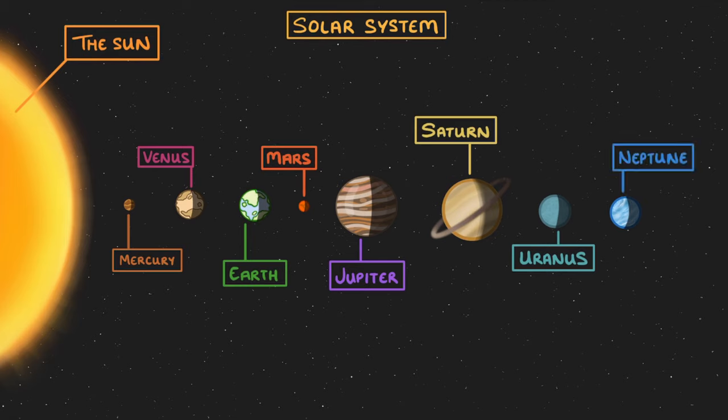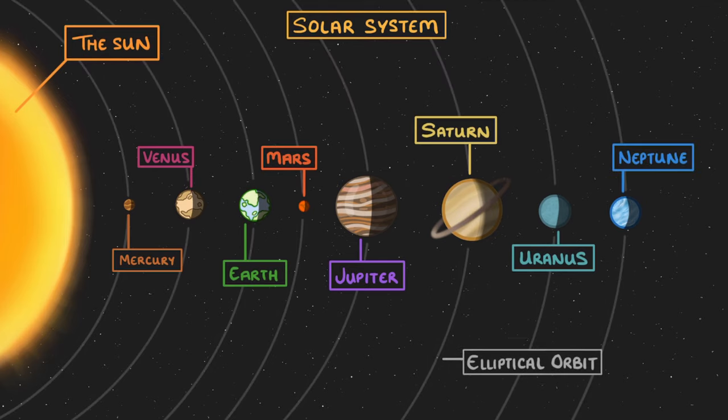All of them orbit the Sun in a slightly elliptical orbit, which means that the path they take isn't a perfect circle. It's as though it's been slightly squashed.